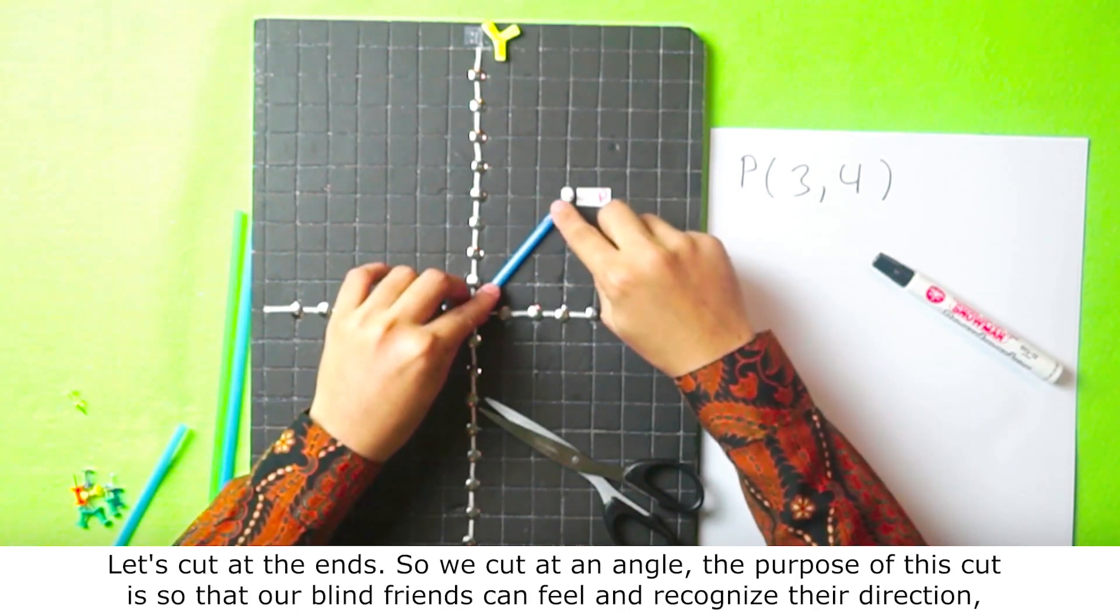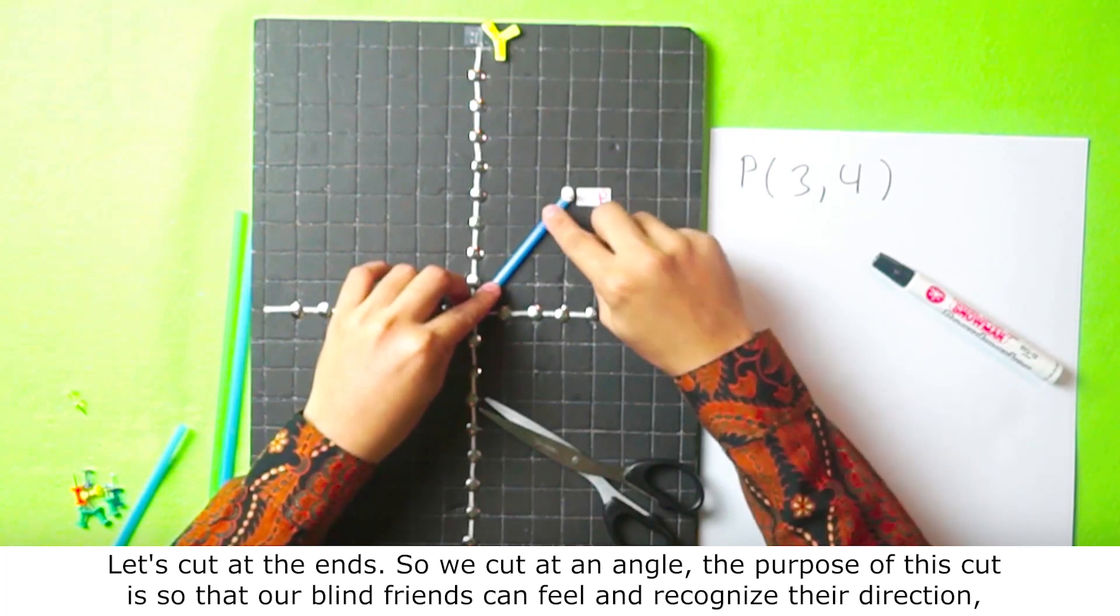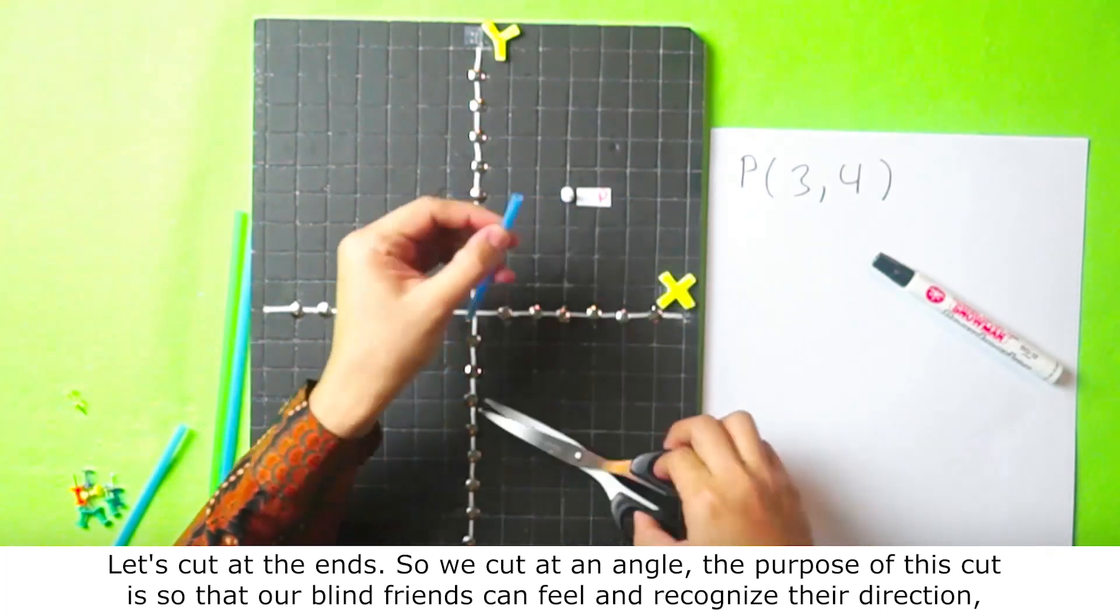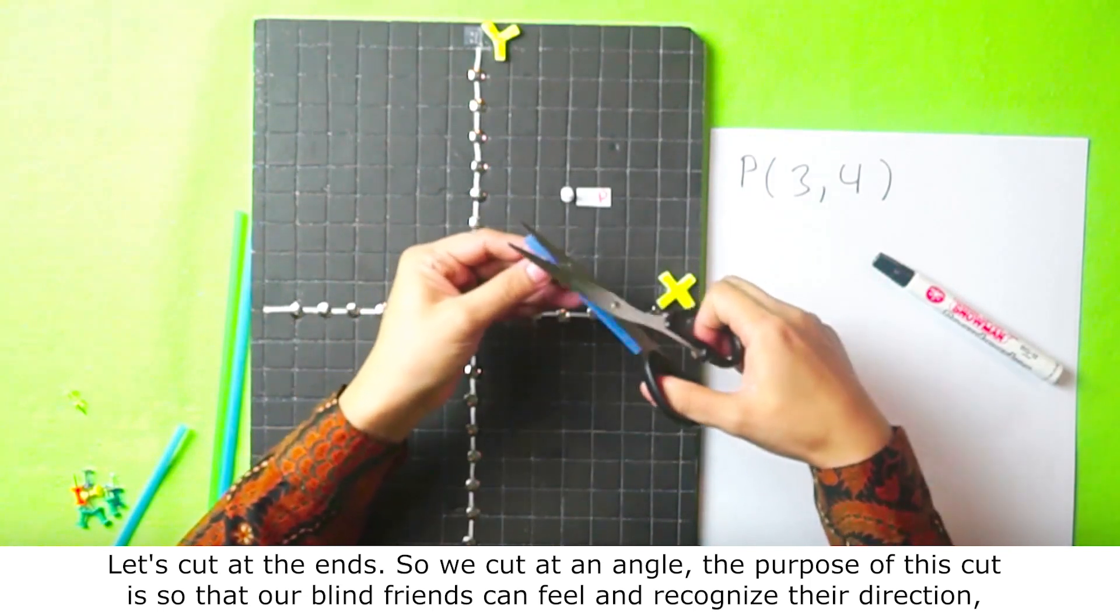Let's cut at the ends. So we cut at an angle. The purpose of this cut is so that our blind friends can feel and recognize the direction.